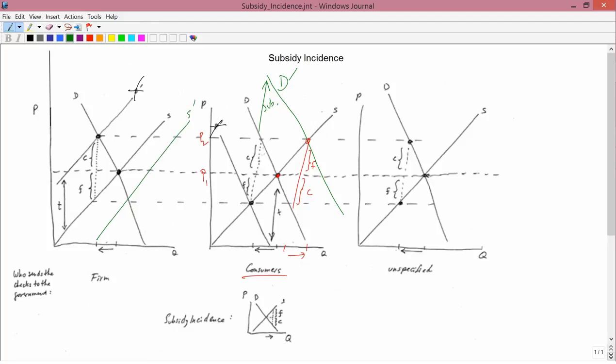So the firm is happy because it gets this subsidy from the government, but on the other hand, the equilibrium price, which used to be at P1, is now down here at P2, which is below. So equilibrium price has fallen. So that doesn't make the firm happy.